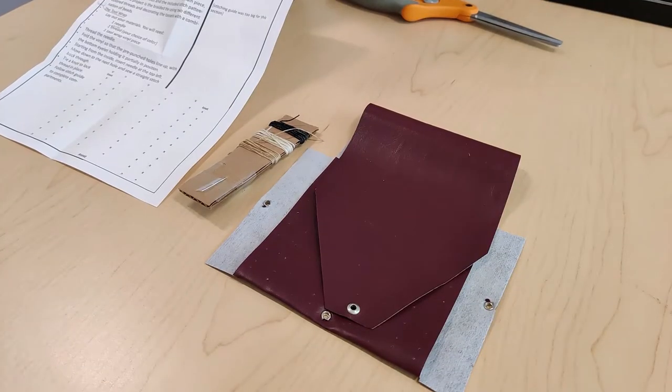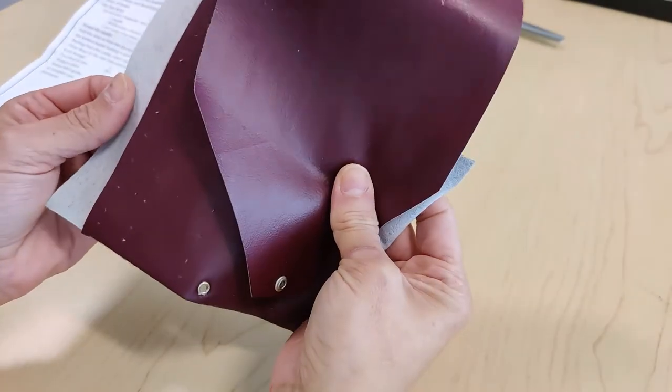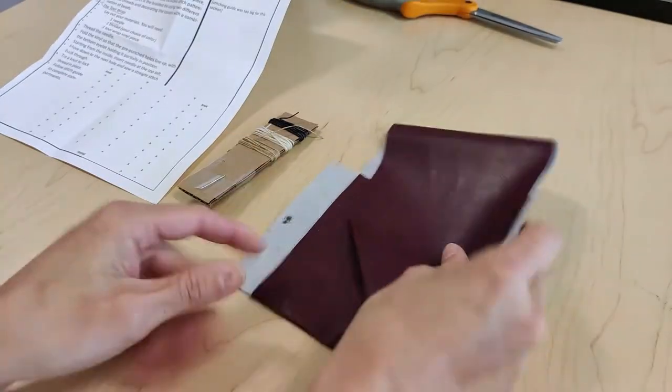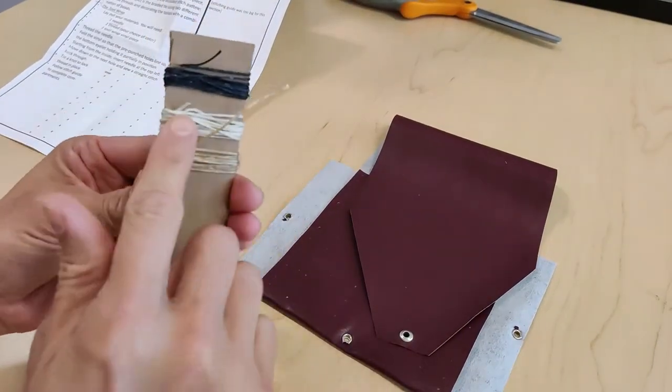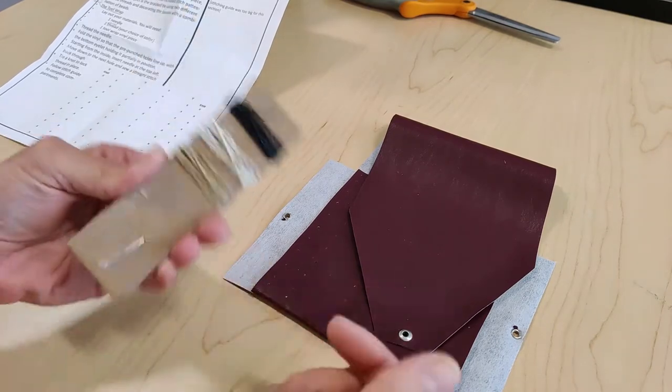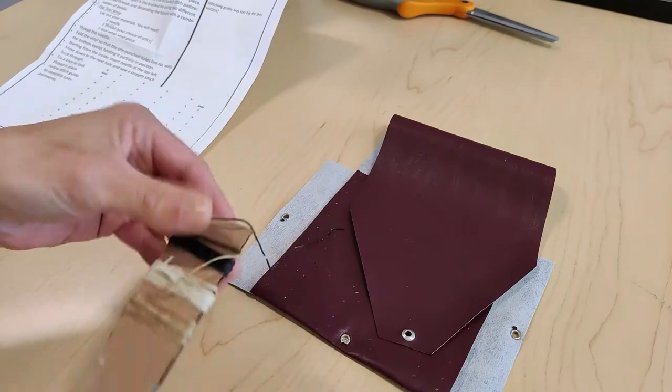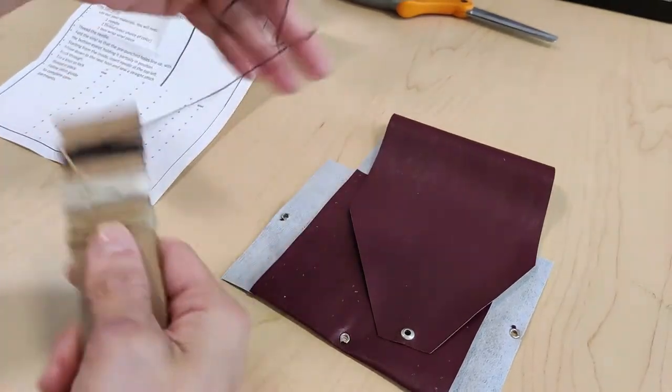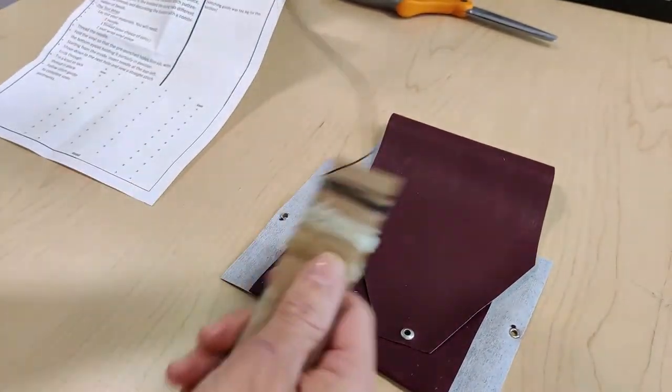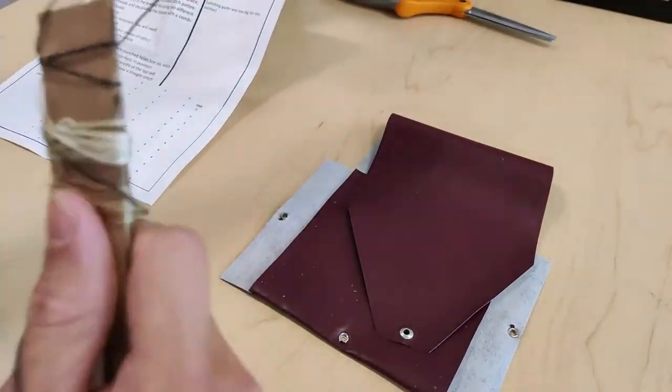For the first part of the project, we're going to be stitching together the tool wrap. So get your piece of pre-cut vinyl wrap. You're going to need one piece of the waxed thread, so you can pick whichever color is your preference. I'm going to use the black for this one. Get your piece of waxed thread, your needle, and you may need your scissors at the end of this part.